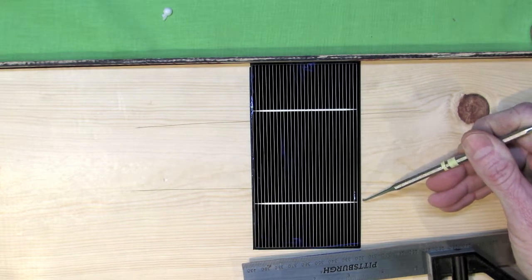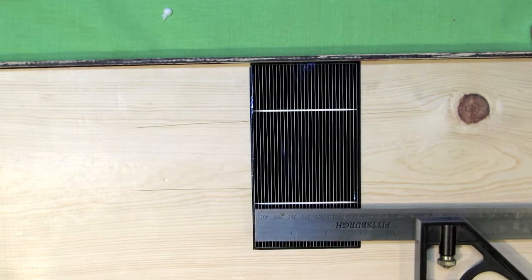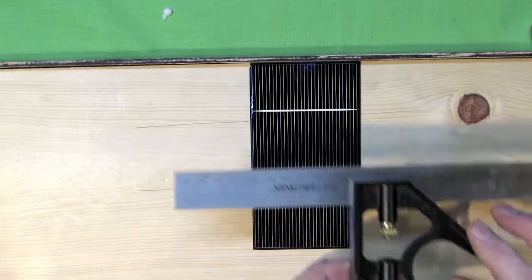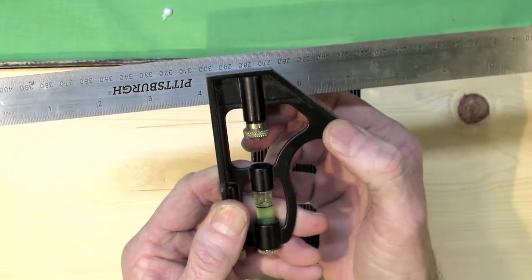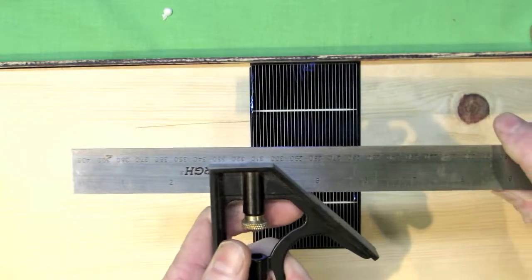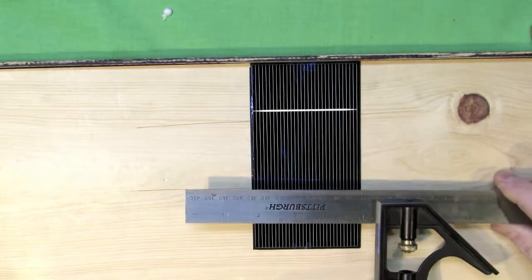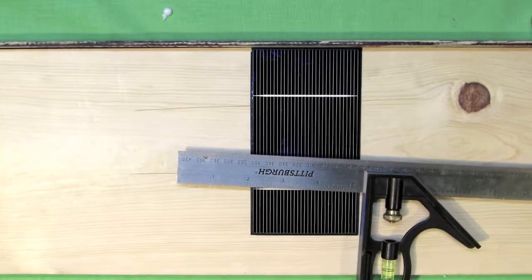We need our bend to be somewhere over the edge of the solar cell. If we try and eyeball it, we aren't going to be very accurate. So what we do is, we use our square again. We loosen the knob to allow for easy movement. You want it to slide pretty easy because you set the handle down, which contains the level.